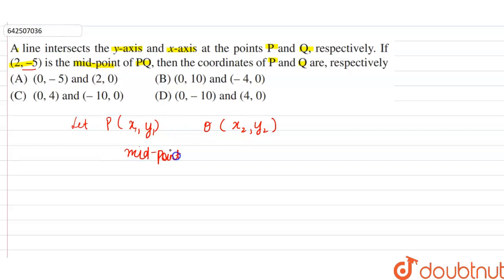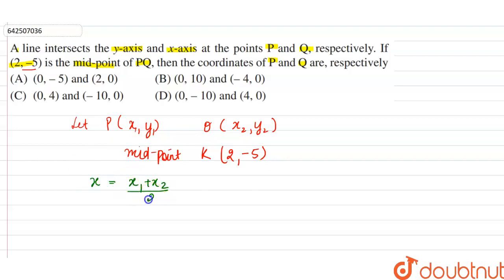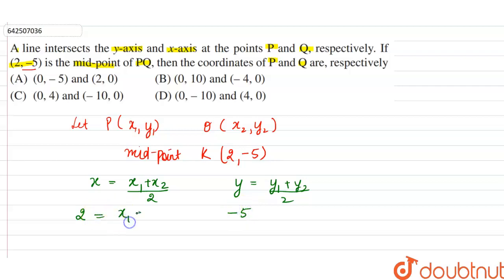The midpoint formula states that the x-coordinate equals (x1 + x2) / 2, and the y-coordinate equals (y1 + y2) / 2. Here, the x-coordinate is 2 and the y-coordinate is -5. So: 2 = (x1 + x2) / 2, and -5 = (y1 + y2) / 2.